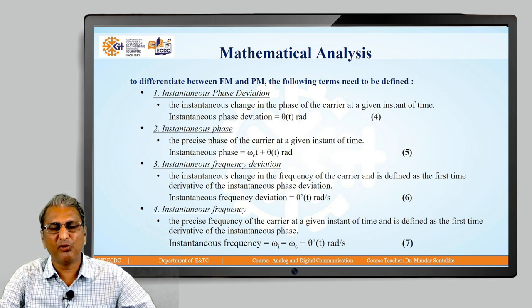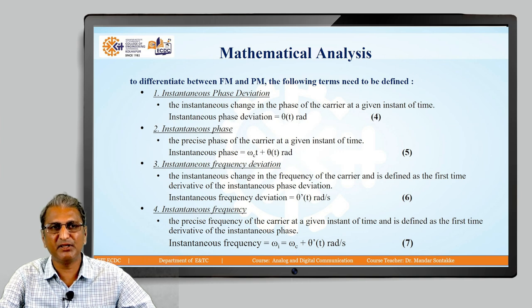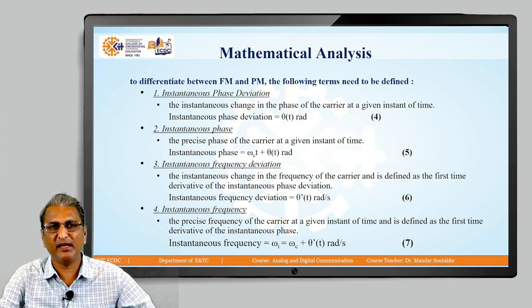The fourth concept is instantaneous frequency — the precise frequency of the carrier at a given instant of time — defined as the first time derivative of the instantaneous phase. It is denoted by omega_i, and the formula is omega_i = omega_c + theta'(t). It is measured in radian per second. This is equation number 7.